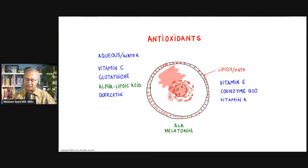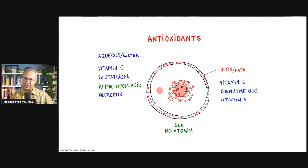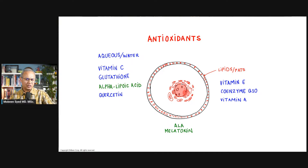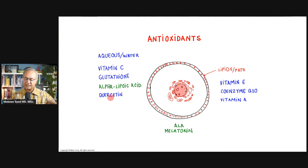Quercetin is another antioxidant for the aqueous, watery environment — water-soluble molecules that are damaged and reactive oxygen species running around in the watery environment, that is where these act. Now, alpha lipoic acid is interesting because it can take care of reactive oxygen species inside the water environment and it can also take care of lipid species inside the lipid environment — it works in both environments.